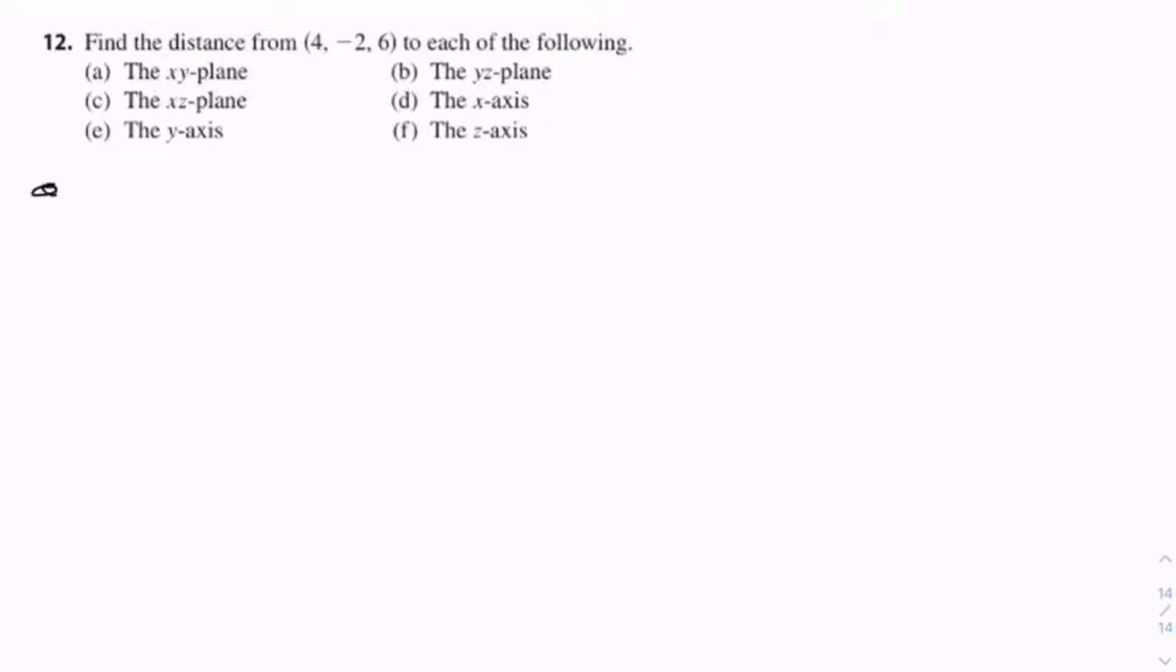Let's start with A, the xy-plane. We know the xy-plane is when z equals 0, so we can write it as (x, y, 0), and x and y can equal anything - 1, 2, 3, 4. They're not bounded at all. With this in mind, we can compare this to our point (4, -2, 6).